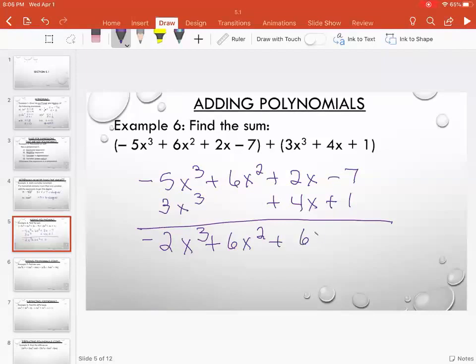2 plus 4 is 6x, and negative 7 plus 1 is negative 6. And you're done.